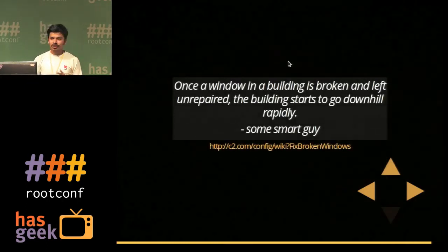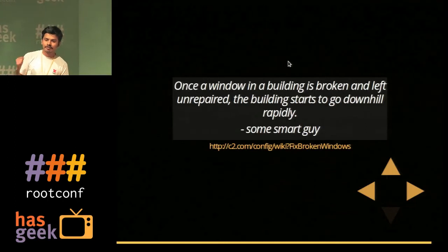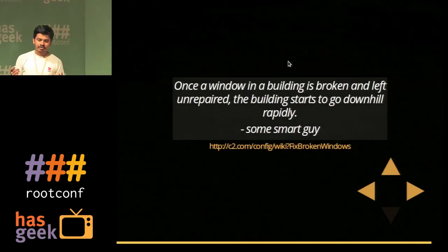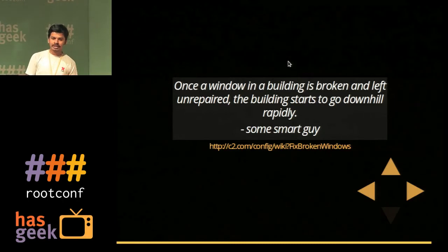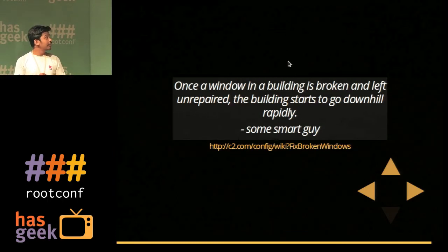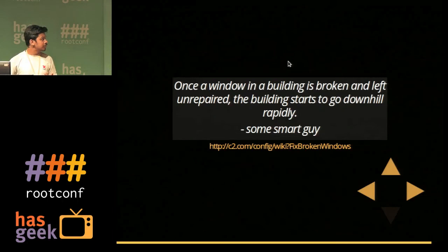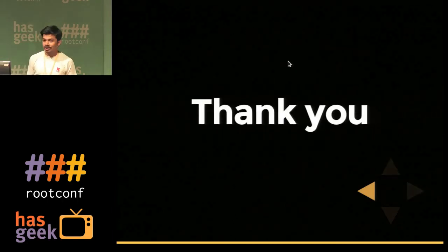Finally, the no re-trigger policy. When Cucumber tests are flaky and fail, I've seen a lot of people just re-trigger the build three or four times until it passes. This is very bad. As someone once said, once a broken window in a building is left unrepaired, the building starts to go downhill rapidly. If you have this habit of re-triggering, the problem grows.